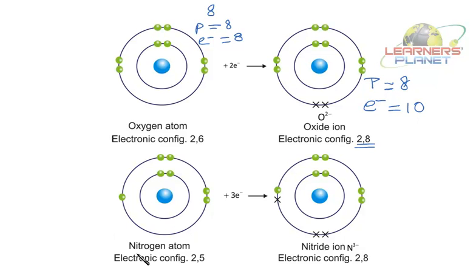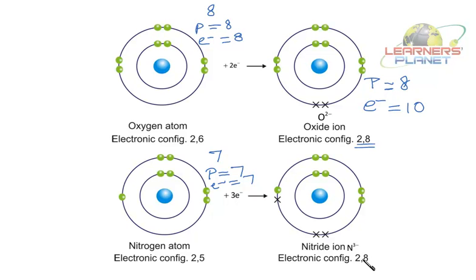Likewise, take nitrogen. Its atomic number is 7, so 7 protons and 7 electrons, with configuration 2, 5. To complete its octet it gains 3 electrons, forming the nitride ion (N3−). To summarize: cations are formed by the losing of electrons by an atom, whereas anions are formed by the gaining of electrons. Cations are positively charged; anions are negatively charged.